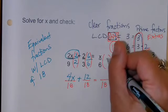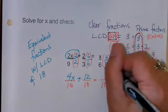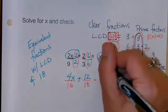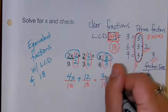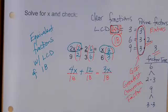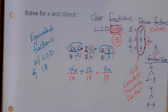What about this last fraction? It currently has a denominator of 6. So to make it have an LCD of 18, I'm going to multiply it by 3 over 3. Good. What is 3 times x? 3x.